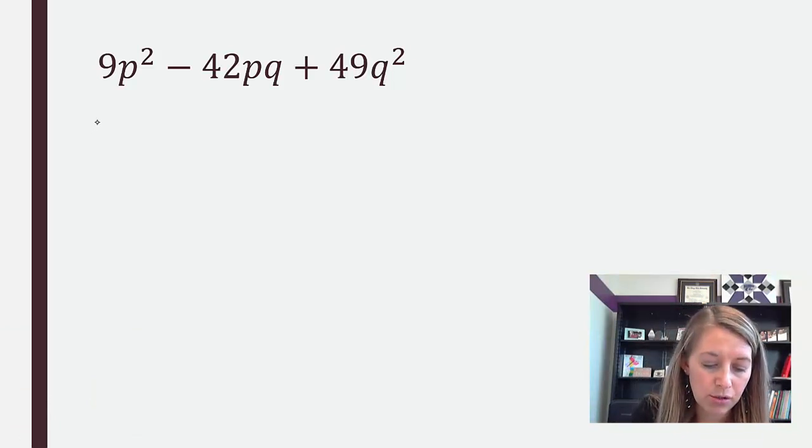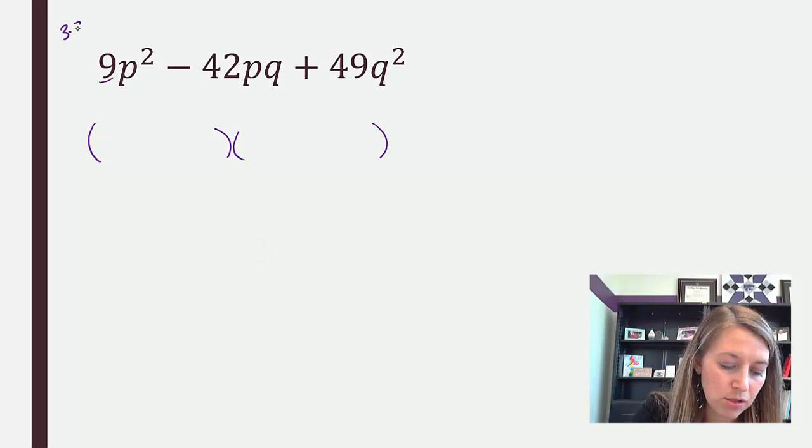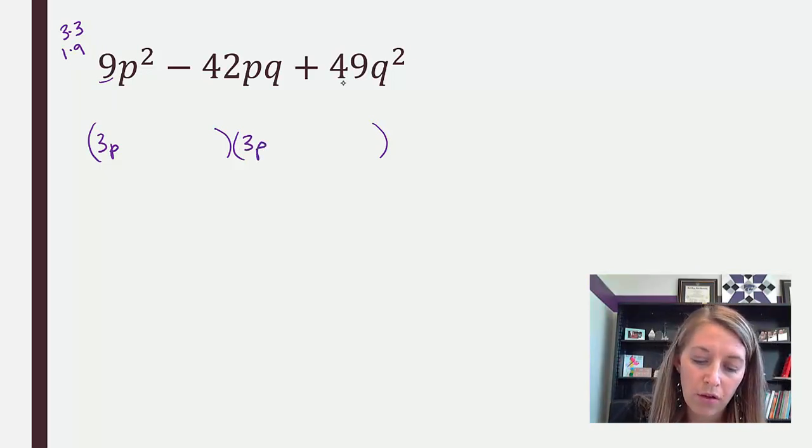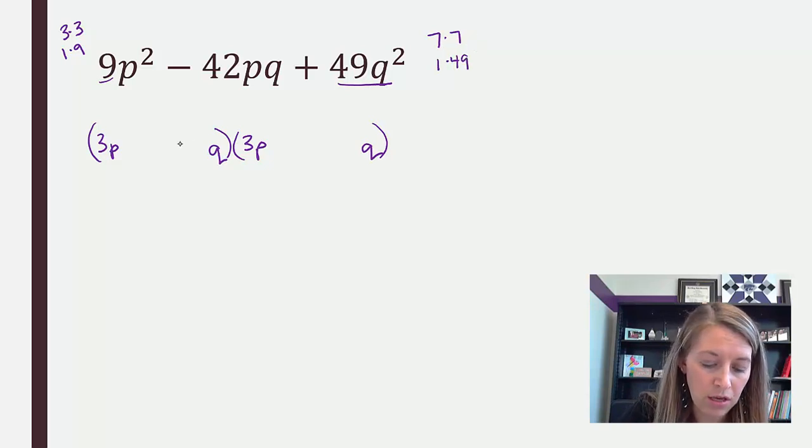Okay, so I'm going to set up my two sets of parentheses. Factors of nine, I have three times three or one times nine. So I'm just going to start with the ones that are closest together, so three P times three P. Looking at my last, I of course have a Q times Q. Factors of 49 is seven times seven or one times 49. Starting with the ones that are closest together here, it gives me seven times seven.